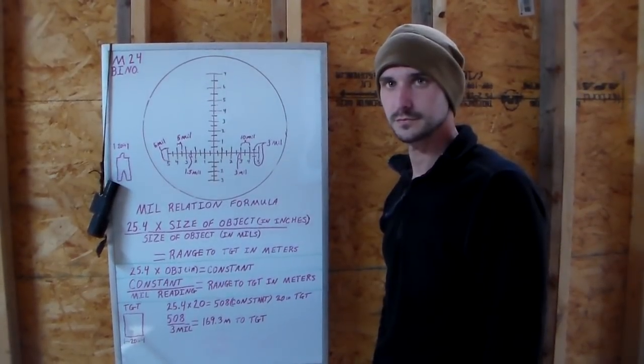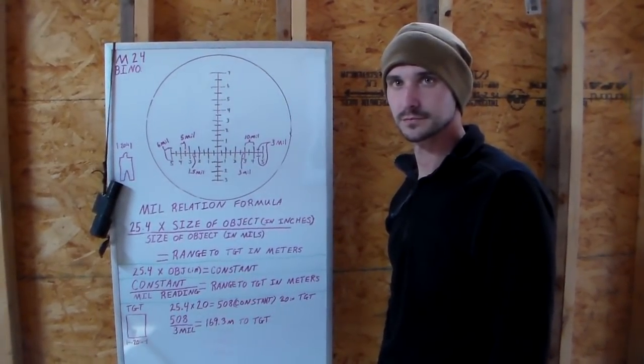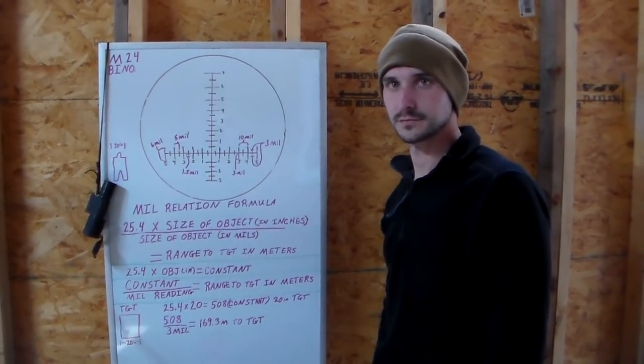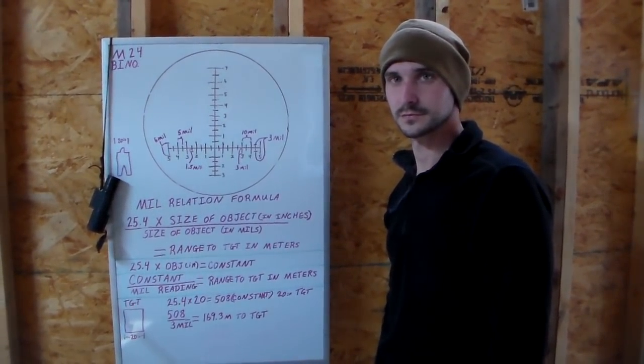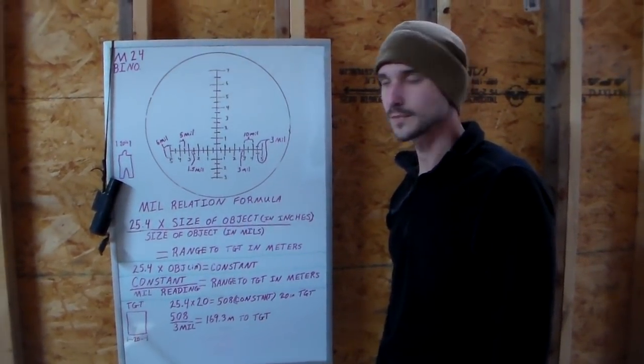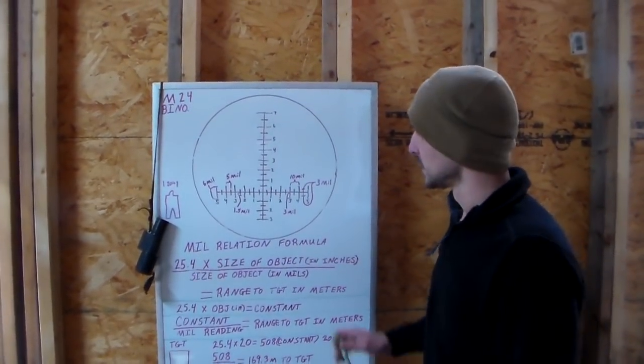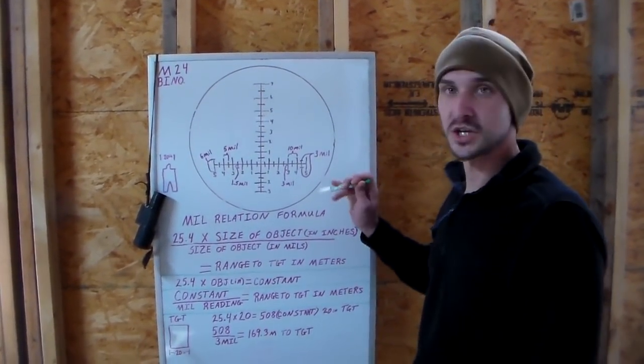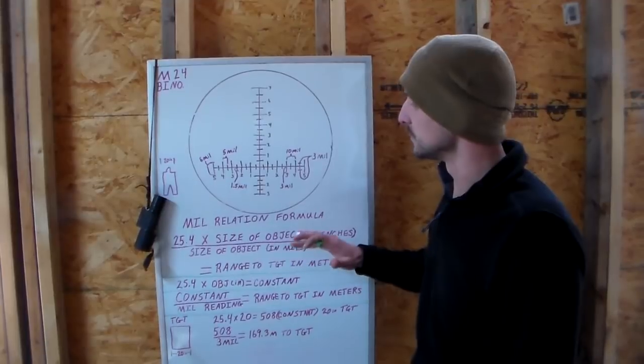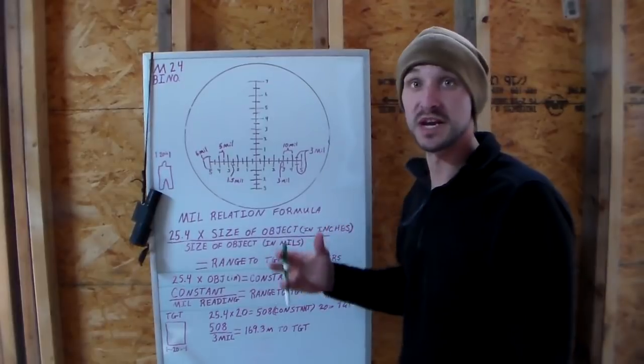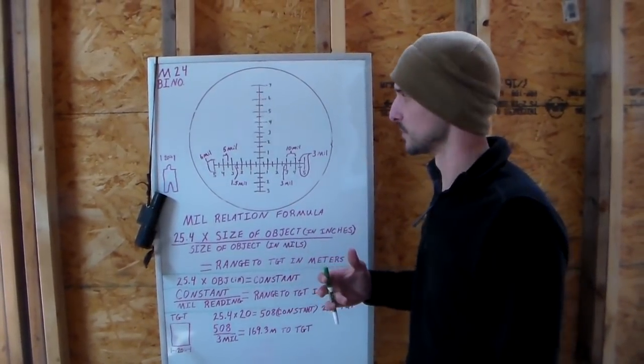Knowing your distance from you to your target is the hardest thing. When you figure that out, it's very easy to put accurate rounds on the target. So let's turn it over to Nate. Okay, so we're doing range estimation. We're going to be talking about milling targets and using a mil relation formula to convert those mils into meters to figure out how far our target is from us.